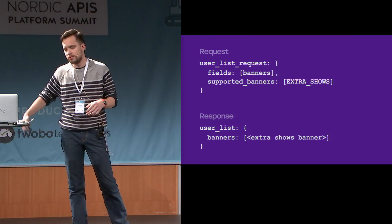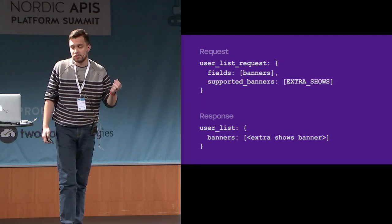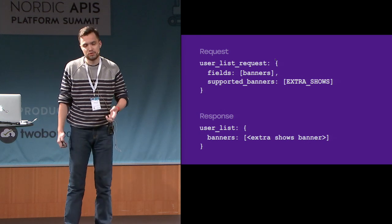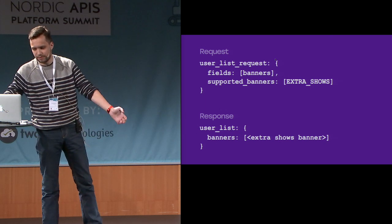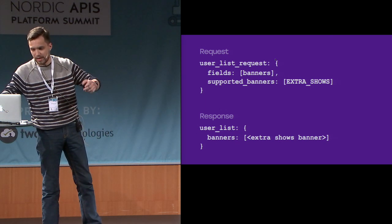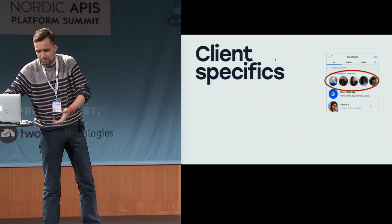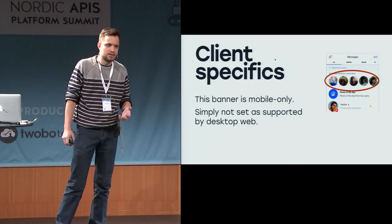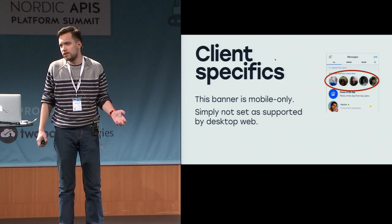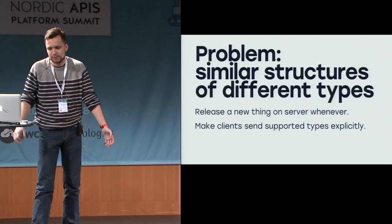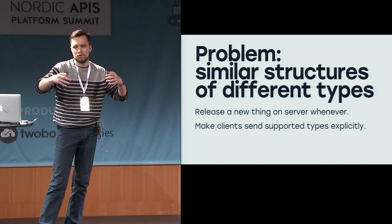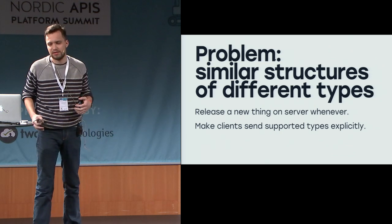Each time a client requests banners, it sends a list of supported banner types. Alternatively, you can send it once at the start of your application — since we don't have a RESTful stateless API, we have a startup call at the beginning and send it there. Besides versioning banners and easily deciding which banners to show, we also get client-specific logic for free. For example, one swipeable banner is not viable on desktop because most desktops don't have a touchscreen — so it's simply mobile-only, and the website just doesn't report supporting it. So for similar structures of different types, you solve it by sending the list of supported types to the server.